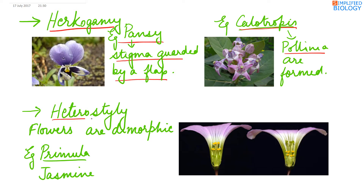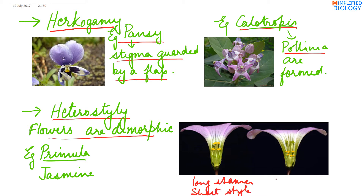Next condition is heterostyly, which means different types of flowers are produced. The flowers are dimorphic, meaning two types of flowers are produced. In one type there are long stamens and a short style, while in the other there is a short stamen and a long style. A long stamen can fertilize a long style and a short stamen can fertilize a short style. Hence cross-pollination occurs. Example: Primula (primrose) and jasmine.